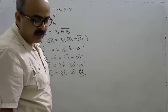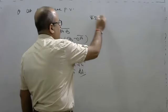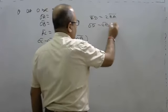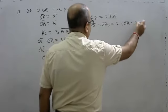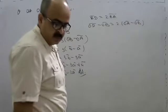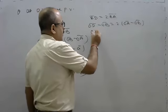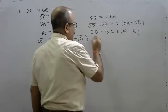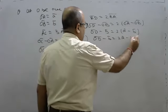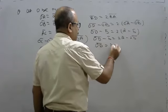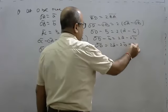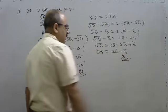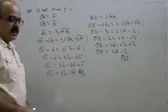OC is equal to 2 vector B. Now for point D: OD minus OB is equal to 2 vector A minus OB. So OD is equal to 2 vector A minus 2 vector B plus vector B, which gives OD equals 2A minus vector B.